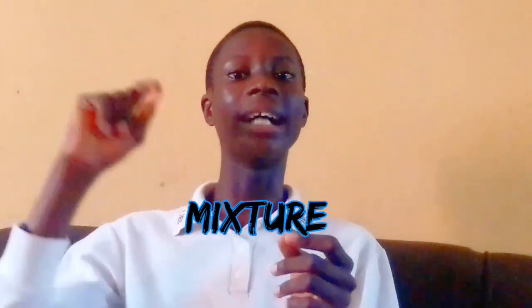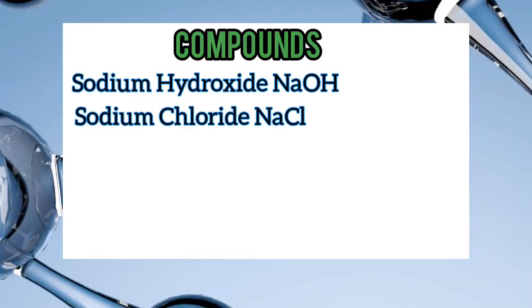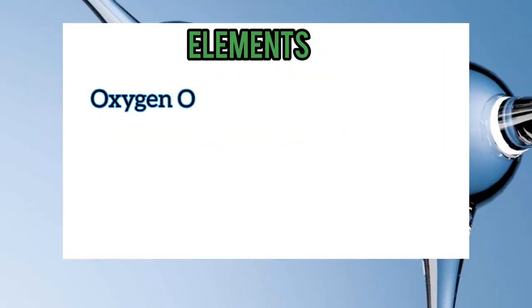You would like to know the differences between these three because the objective relating to this subtopic is to differentiate between elements, mixtures and compounds. An element is easy to differentiate from a compound. Examples of compounds include sodium hydroxide, sodium chloride, hydrogen chloride and so on, while elements are oxygen, nitrogen and so on. But when it comes to differentiating between a mixture and a compound, many of you will find this hard.